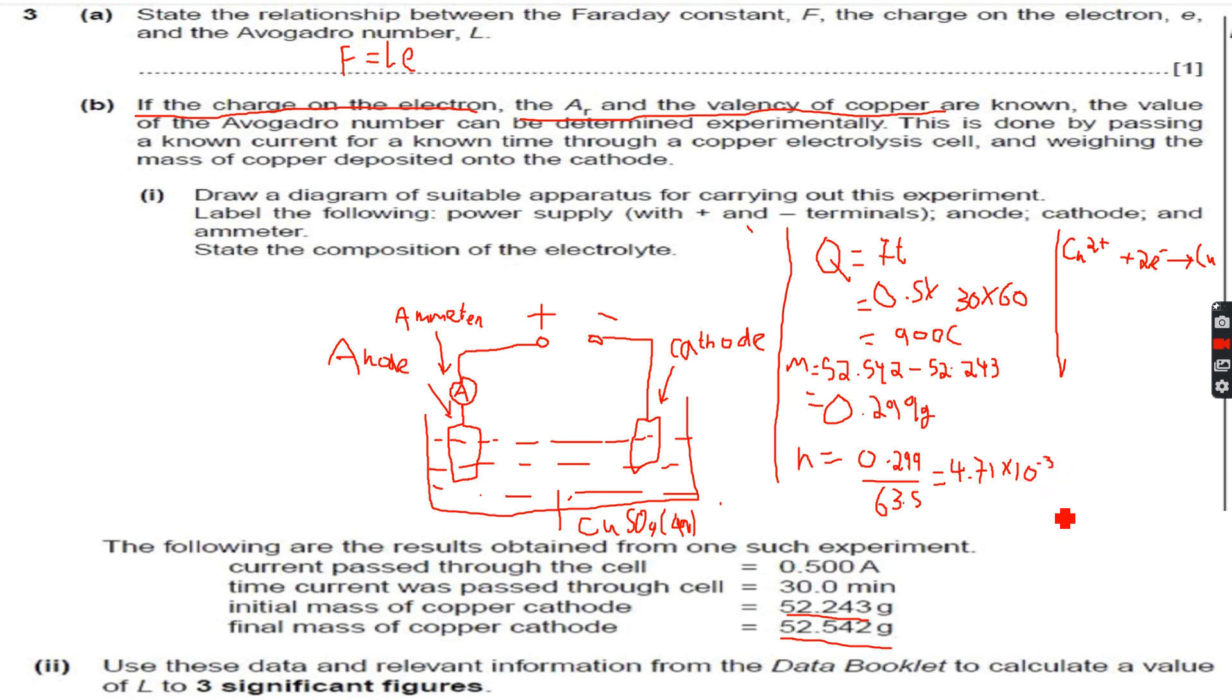Now we would have to calculate the number of moles of electrons. We can see that copper and electrons have a 1 is to 2 ratio, so 1 mole of copper means 2 moles of electrons. So this is the number of moles of copper. The number of moles of electrons will be equal to 4.71 into 10 to the power of minus 3 multiplied by 2.